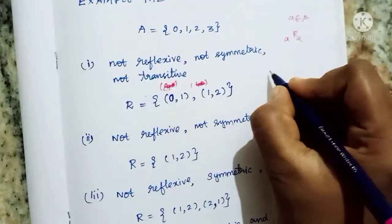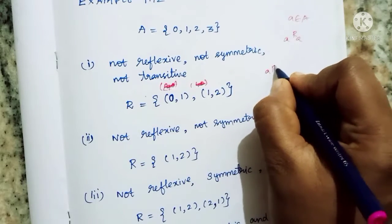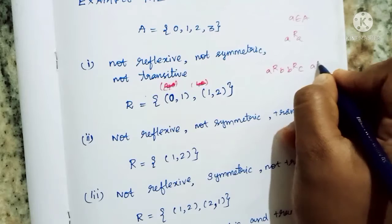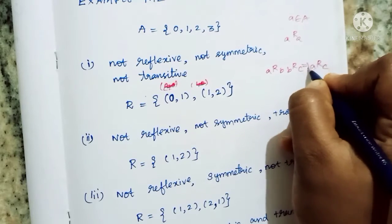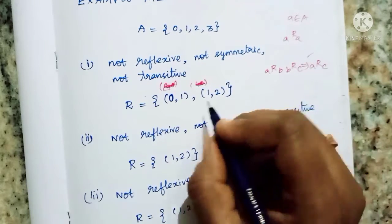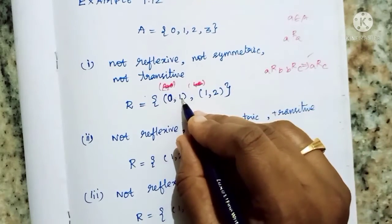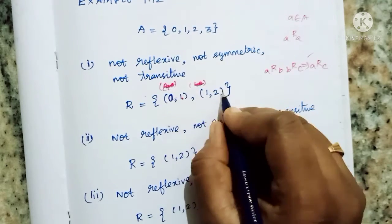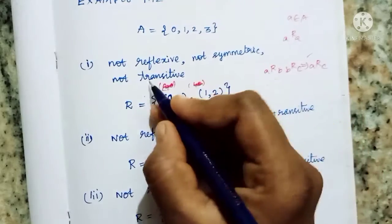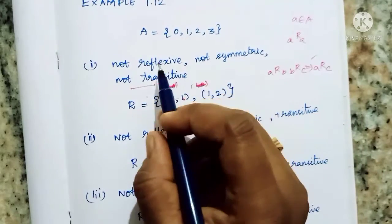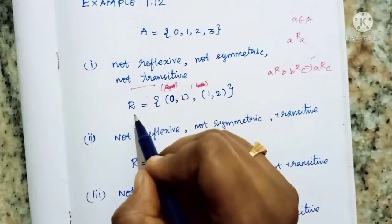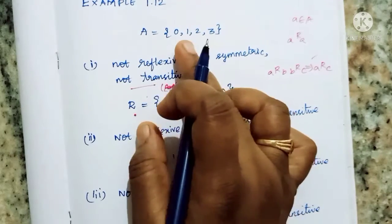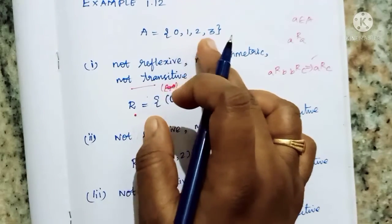Next: is A related to B, B related to C, and A related to C? We call that transitivity. Now there is (0,1) and there is (1,2), but (0,2) doesn't exist in the relation — that means it is not transitive. So if we construct a relation, if it is reflexive, we pair all 4 elements.